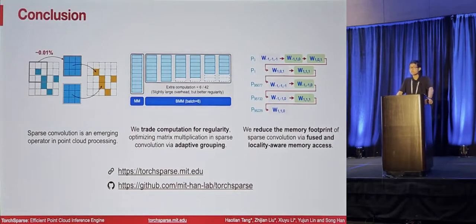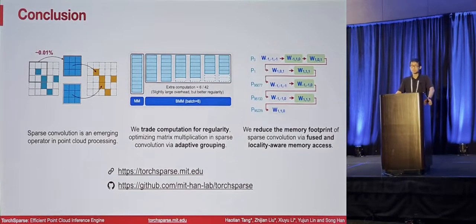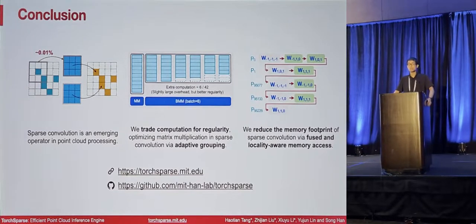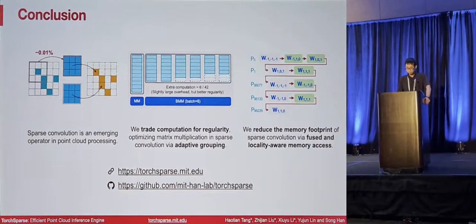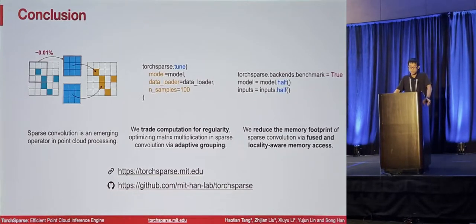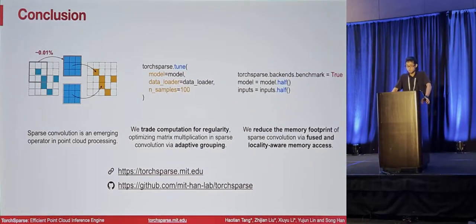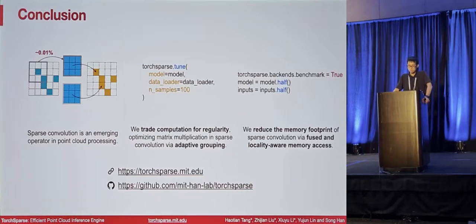In conclusion, in this work we optimize sparse convolution, an emerging operation in point cloud processing. We trade computation for regularity, optimizing matrix multiplication in sparse convolution via adaptive grouping. We also reduce the memory footprint of sparse convolution using FUSE and locality-aware memory access. Both optimizations can be enabled with very simple API changes — using torch_sparse.tune for adaptive grouping, and three lines of code to enable vectorized memory access and FUSE locality pattern. Our code has been released on GitHub and we have a project page with our paper for more details.